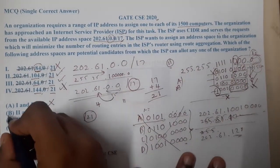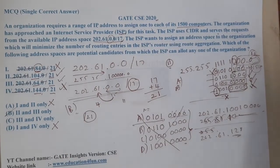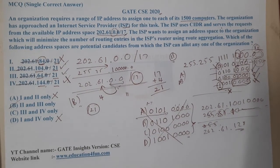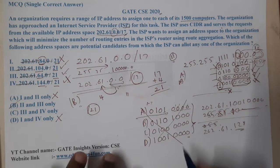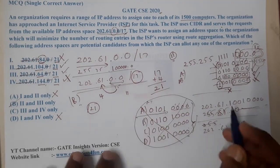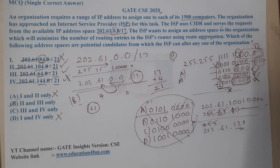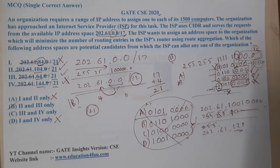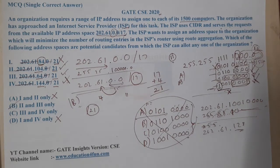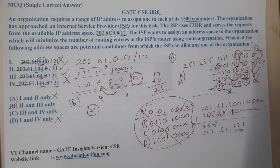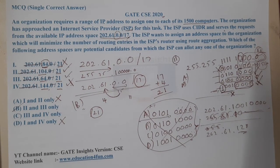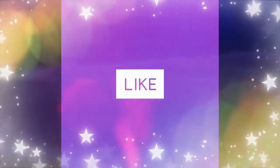We can conclude that options B and C are correct. The final answer is option C (which includes both B and C as valid candidates). The small confusion was in calculating intermediate AND results unnecessarily — the key check is whether the subnet belongs to the parent /17 block and has enough host bits. I hope everyone got a clear idea. In the next lecture, we'll continue with the next question. Thank you — like, share, and subscribe for more videos.